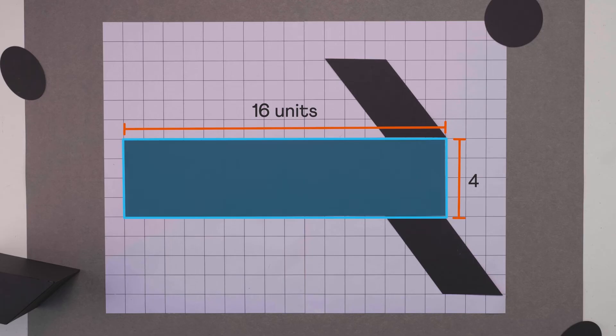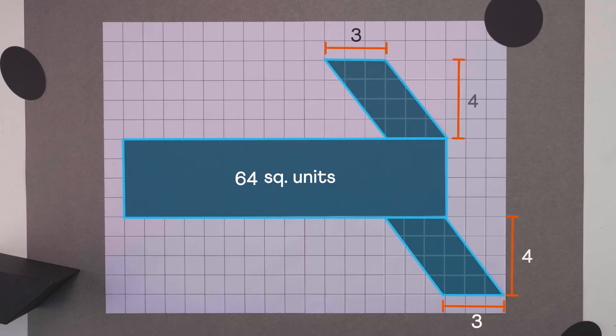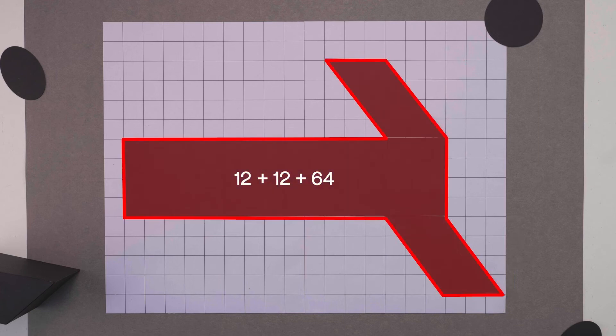So the area of this rectangle is 16 times 4, or 64 square units. The area of each parallelogram is base times height, that's 12 square units. Adding these areas gives the surface area of the prism, that is 88 square units.